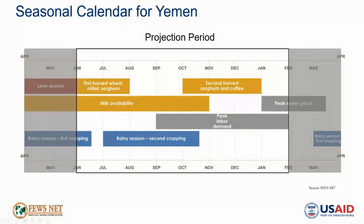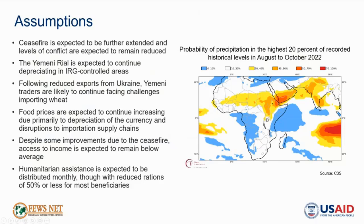Turning to expectations for the projection period through January 2023, and looking back at the seasonal calendar: Yemen's second rainy season typically occurs from July to October, and in most rural areas the main harvest of cereals, fruits, and vegetables occurs in the fall. Our key assumptions for the projection period include that the ceasefire will continue to be extended, given the benefits both parties are experiencing and the previous two extensions. In IRG-controlled areas, we expect the currency will likely continue to depreciate during the projection period, given expectations for foreign exchange shortages and absence of meaningful government controls or financial support.